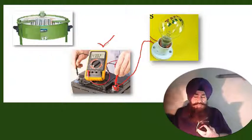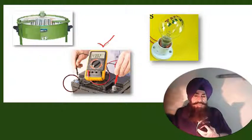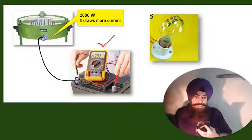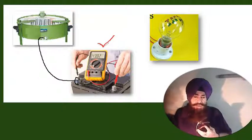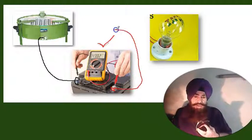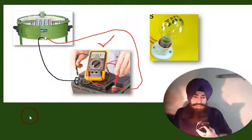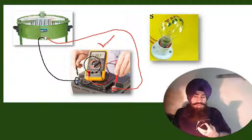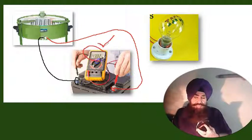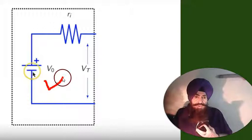This voltage is called VT, the terminal voltage. Now if you connect the voltage source to a heater — say 2000 watts — it draws more current. When it draws more current, this voltage on the multimeter will change further.